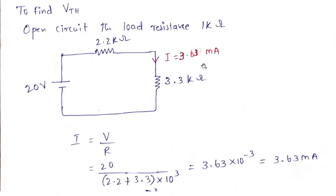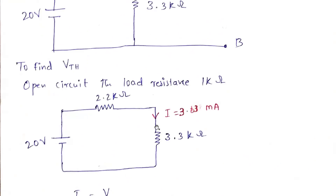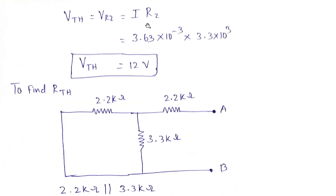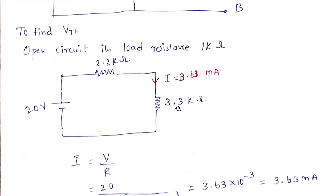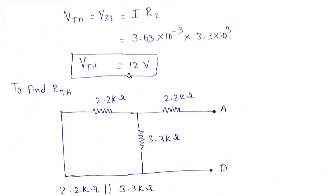Now we need to find VTH. VTH equals I times R2. I is 3.63 milliamperes, and R2 is 3.3 kΩ (3.3 × 10³). The powers of 10 cancel out, and simplifying we get VTH equal to approximately 12 volts.